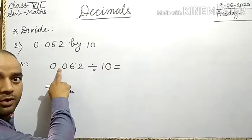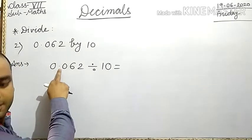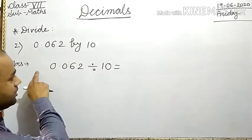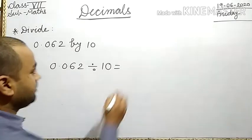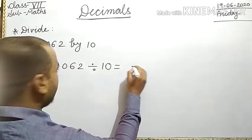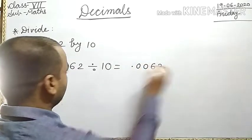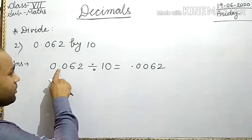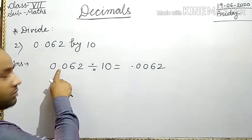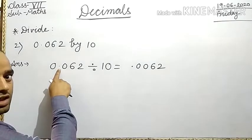Shift the decimal point to the left by one place, which means 0.0062. Shifting the decimal point one place to the left.